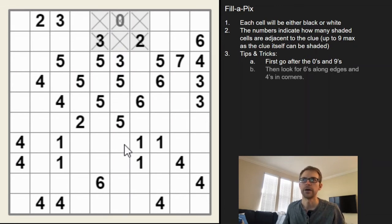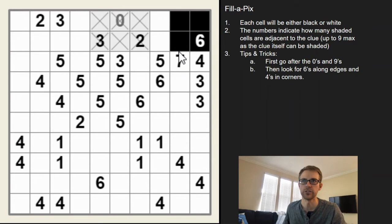Sixes along edges and fours in corners will yield you the same result. The six here, we know all of the cells are going to be shaded in since there's no cells to the right. There's only six cells adjacent to the six. This four has been solved now. You can see four cells are shaded, so we